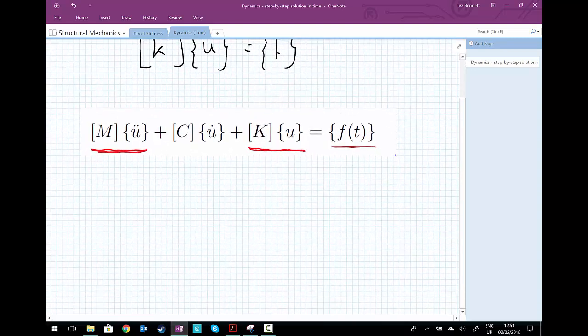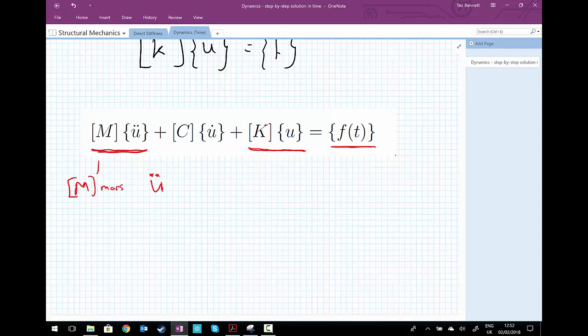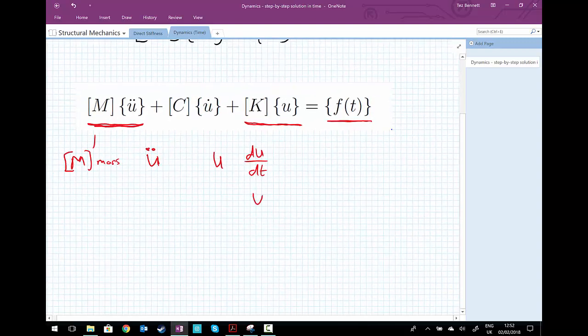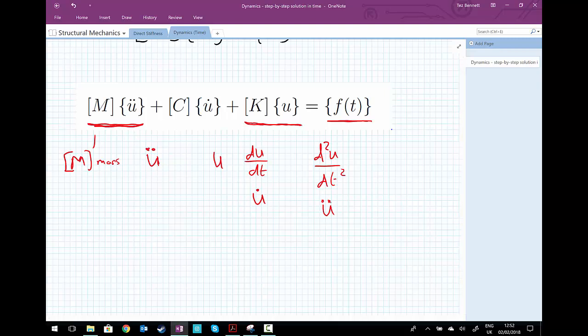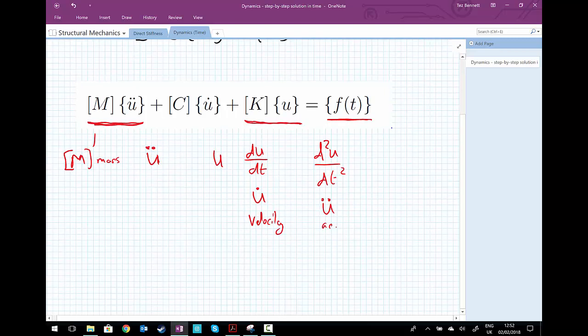A couple of things to note: K is still the stiffness matrix, and U is the displacement. M is the mass matrix, and U double dot—the dot above the letter denotes differentiation with respect to time. So we have U, DU by DT, which we're also writing as U dot. It's a nice shorthand notation. We can also write D²U by DT², which we write as U double dot. DU by DT, the change in displacement with time, is the velocity, and D²U by DT² is the acceleration.